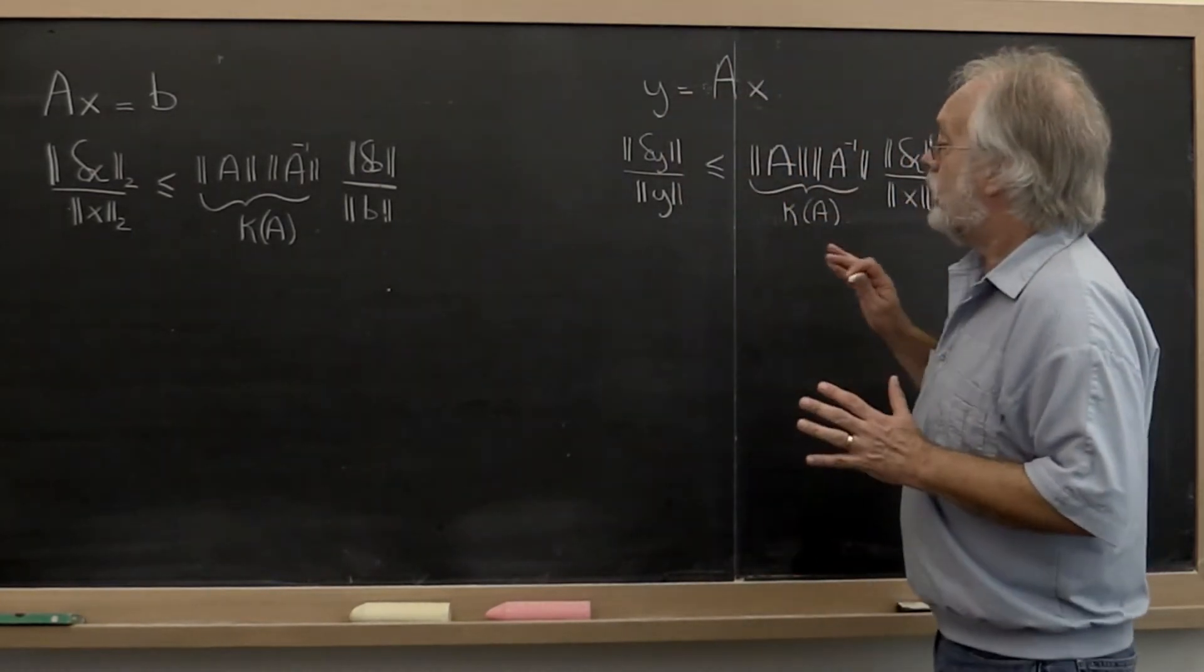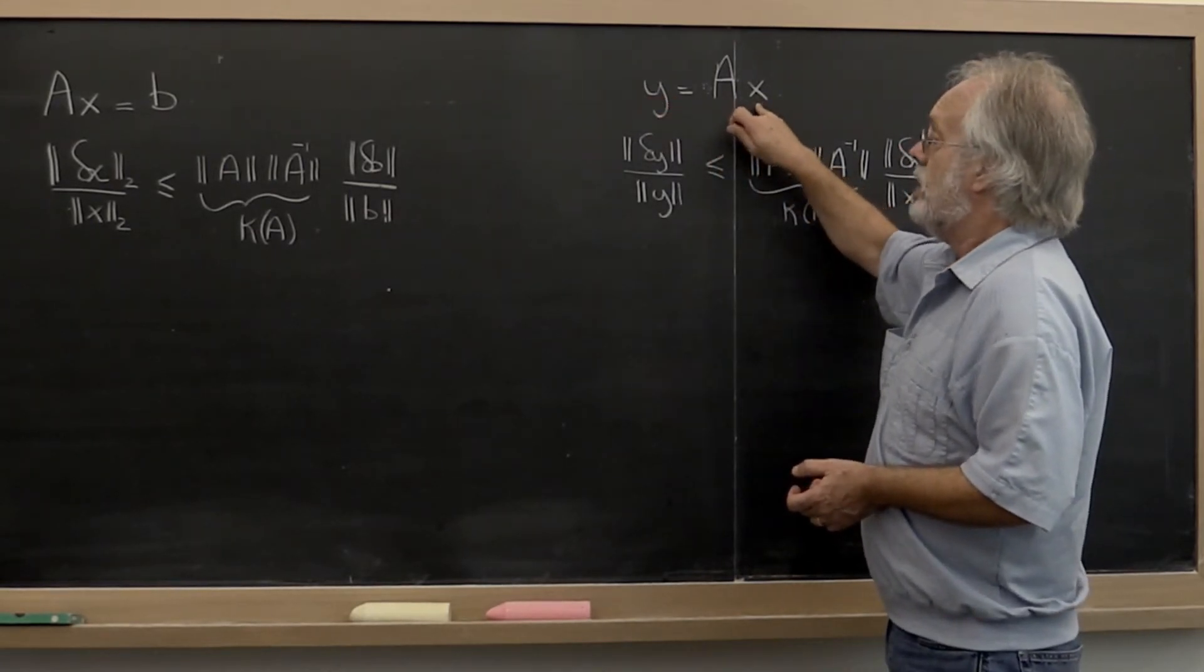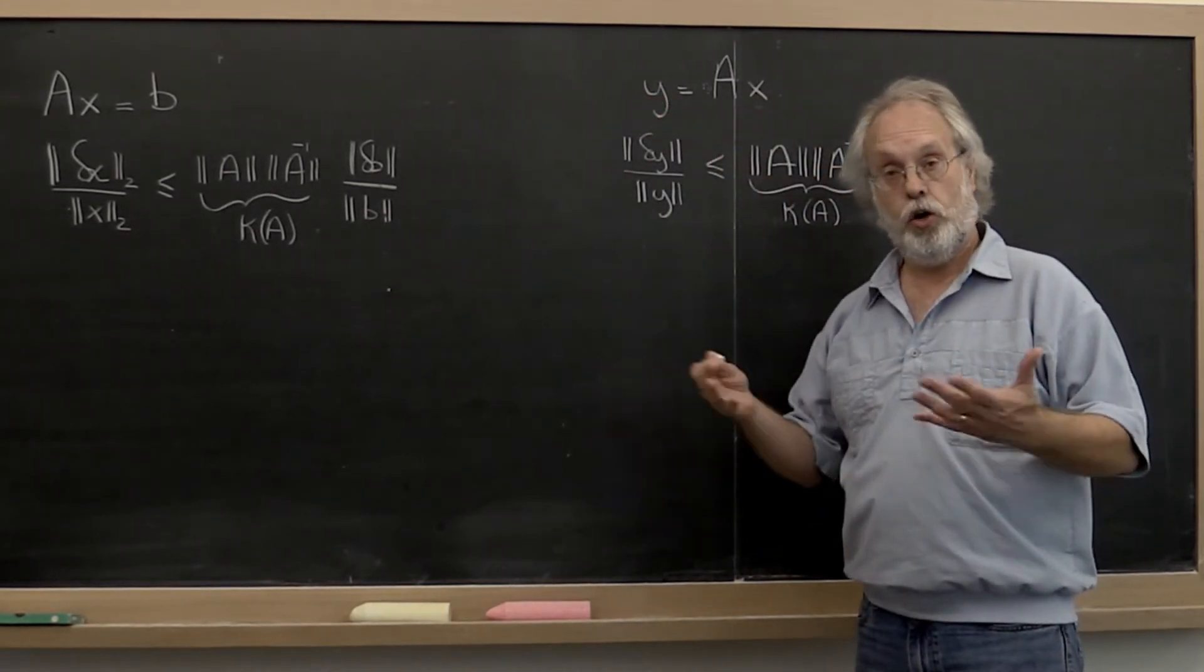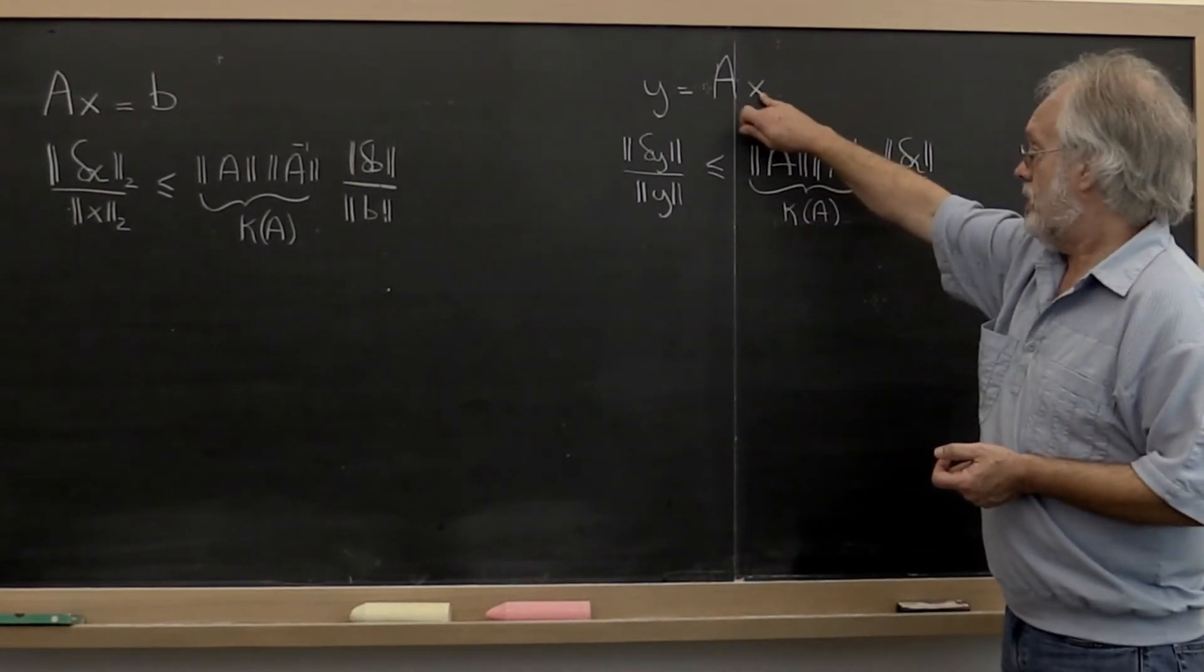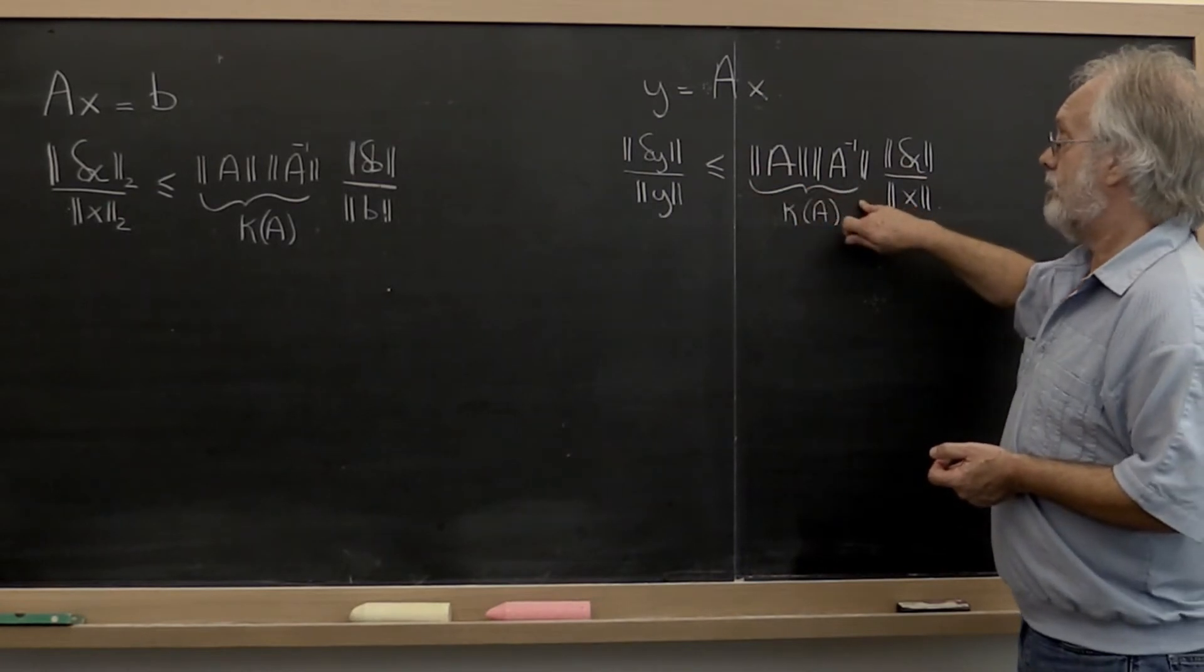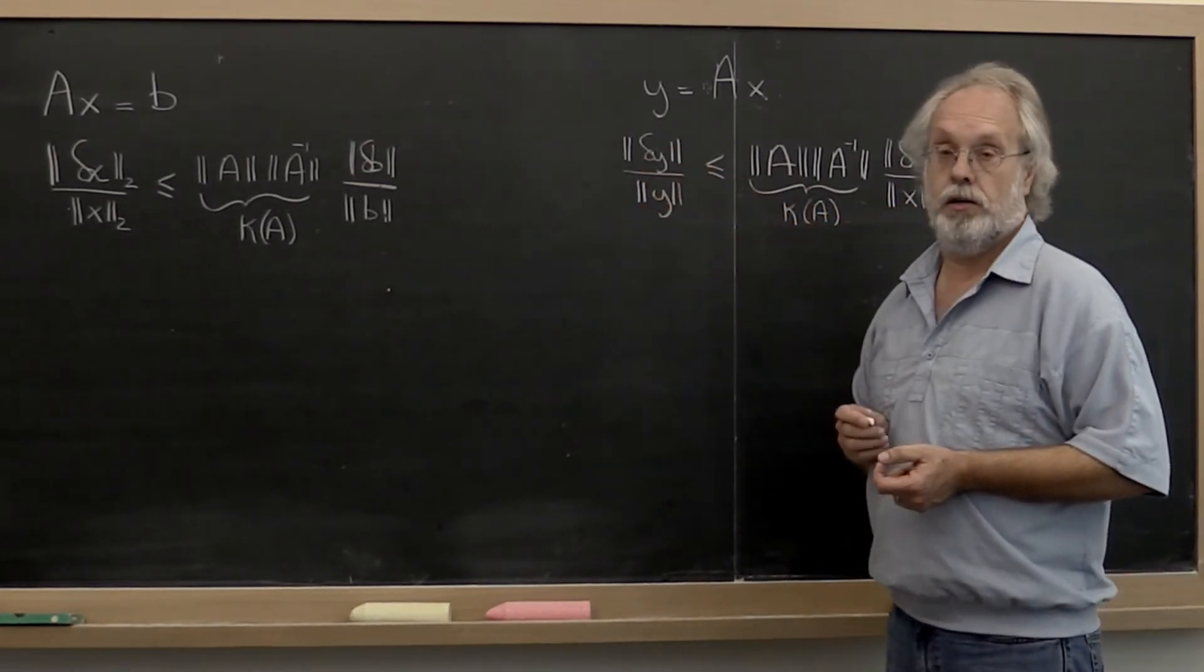Now you can do the exact same thing when you do y equals A times x. And what you're going to see in a homework for this unit is that the relative error in x that goes in is at most amplified by the condition number of A into a relative error in y.